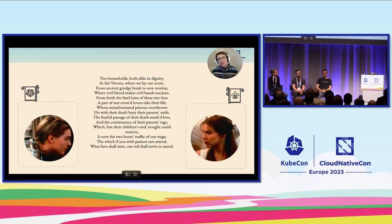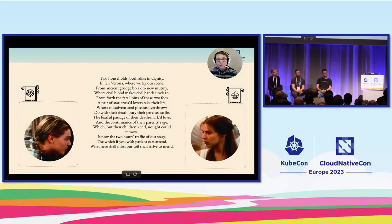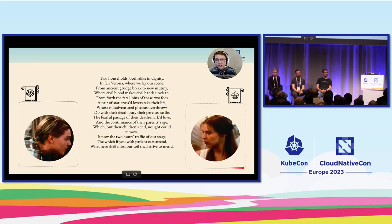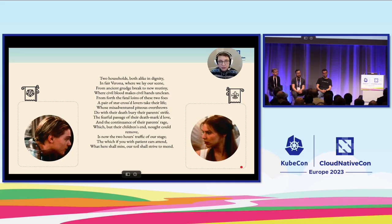We're going to quickly demonstrate how these APIs all come together with a little bit of Shakespeare. In the 1993 version of Romeo and Juliet, we have Leonardo DiCaprio cast as Romeo Montague on the left and Claire Danes as Juliet Capulet on the right. Romeo and Juliet fell in love despite being in desperately feuding families — or in today's case, desperately feuding clusters instead.